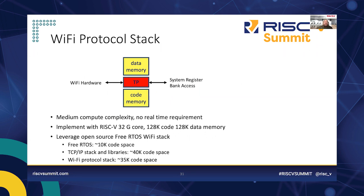The WiFi protocol stack is medium complexity but has no real-time requirement. We used an RV32G core with 128KB of code space and 128KB of data memory. We found a WiFi stack running on top of FreeRTOS, minimally configured for a single thread, stripping out many options. Code breakdown: FreeRTOS ~10KB, TCP/IP stack and libraries ~40KB, the open-source WiFi protocol stack ~35KB — more than 64K but less than 128K, so we went with 128KB memory. This became a fairly compact hardware block.